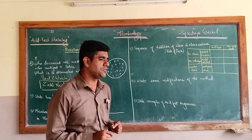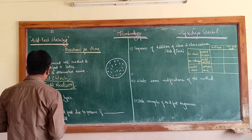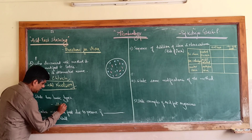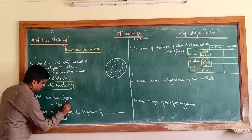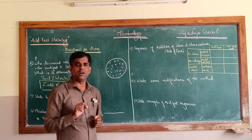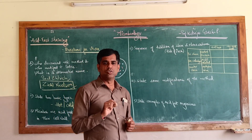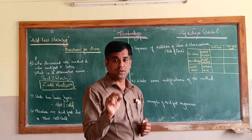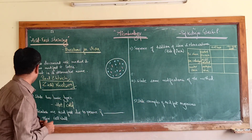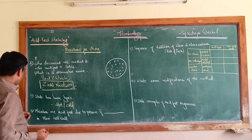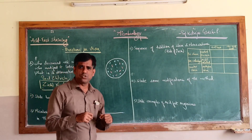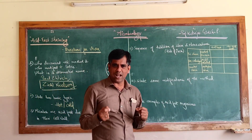The next question: state the two basic types of acid fast staining. The two basic types are generally the hot method and the cold method. Most commonly in the laboratory we use the hot method of the Ziehl-Neelsen staining.